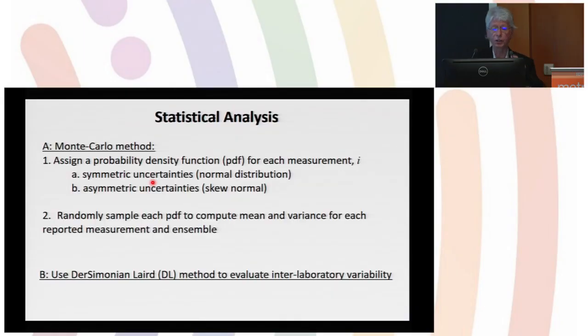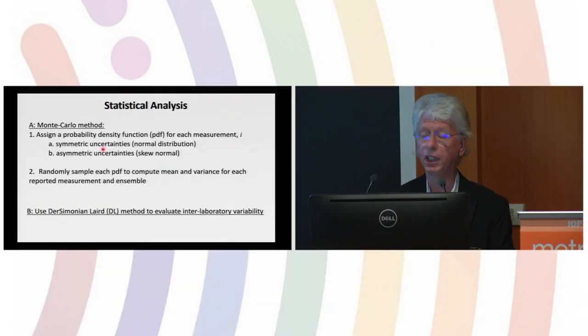We did a statistical analysis based on Monte Carlo distributions. We assumed symmetric uncertainties for six of the cases where there was no extra components in either direction, and asymmetric uncertainties using a skew normal distribution. We randomly sampled the probability density functions to compute the means and variance for each case. We also looked at the Dersimonian-Laird analysis to provide any evidence of so-called dark variance associated with interlaboratory variability that could not be captured by the uncertainties that were assigned.